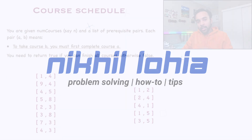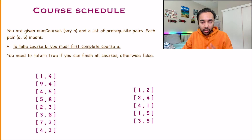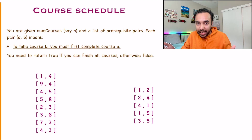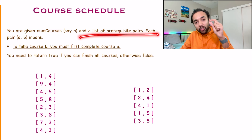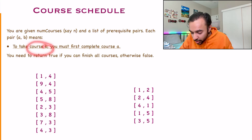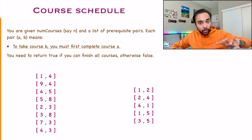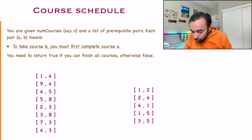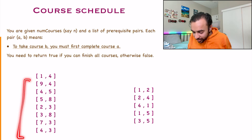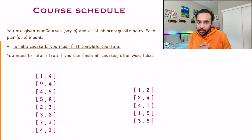Hello friends, welcome back to my channel. Let's try to make sure that we are understanding the problem statement correctly. You are given some N courses, and then you are given a list of prerequisite pairs. They are given as A, B — it means that to take course B, you must first complete course A. Given such a list, you have to return true if you can finish all of the courses, or you need to return false.